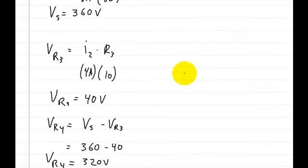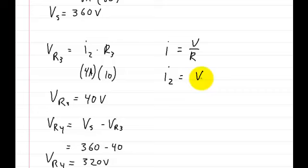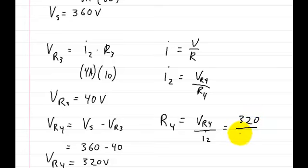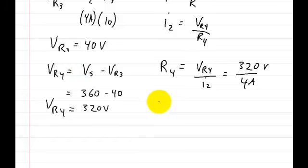So the current is equal to the voltage divided by the resistance. In this case, we're using I2. That's going to be equal to the voltage on resistor 4 divided by R4. So we're just going to manipulate this equation. We're going to say R4 is equal to the voltage on R4 divided by the current I2. And so that's just going to be equal to 320 divided by 4 amps. So the resistor R4, that's going to be equal to 80 ohms.